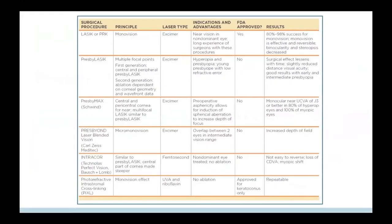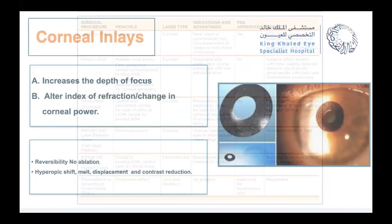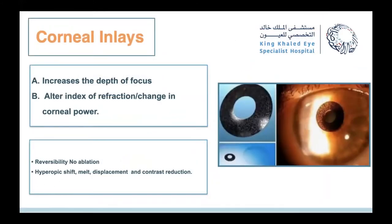Almost all companies — Alcon, Bausch & Lomb, Zeiss, Schwind — have their own variation of this concept, but they all aim for the same thing: a multifocal cornea with different zones allowing the patient to see near, intermediate, and distance. Regarding corneal inlays, we either achieve monovision by increasing depth of focus via a pinhole effect, or we alter the refractive index to change corneal power. The advantage of inlays is that they are reversible, with no ablation as in presbyLASIK.